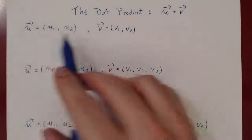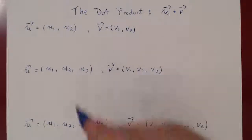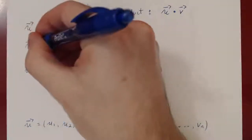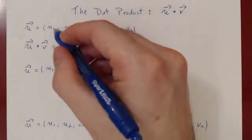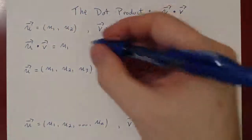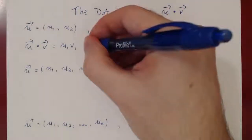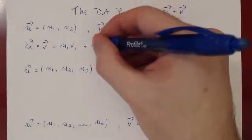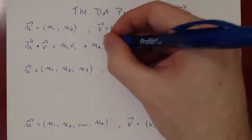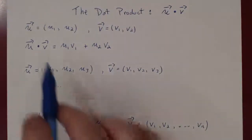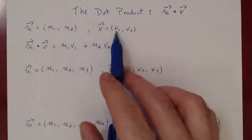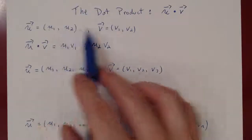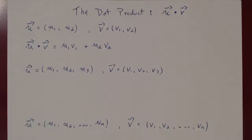Suppose we have two vectors u and v in R2 — vectors in the plane with two components. How do we compute u dotted with v? What we do is remarkably simple. We take the first component of u, u1, times the first component of v, v1, plus the second component of u, u2, times the second component of v, v2. We multiply corresponding entries — first with first, second with second — and we add them up.